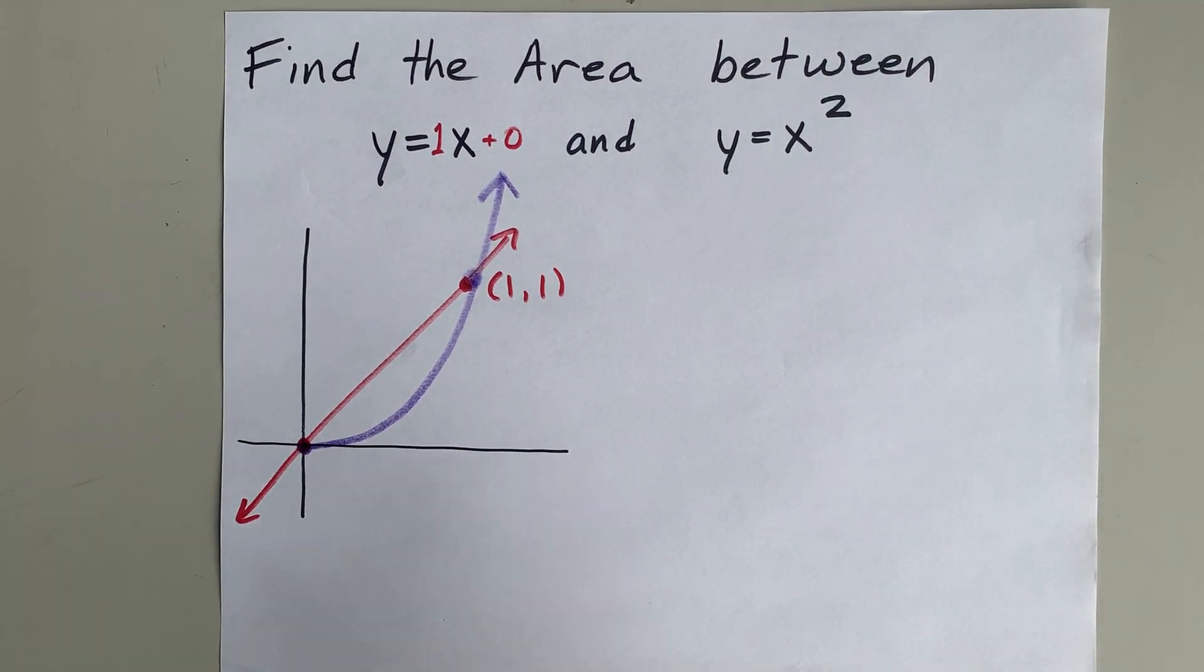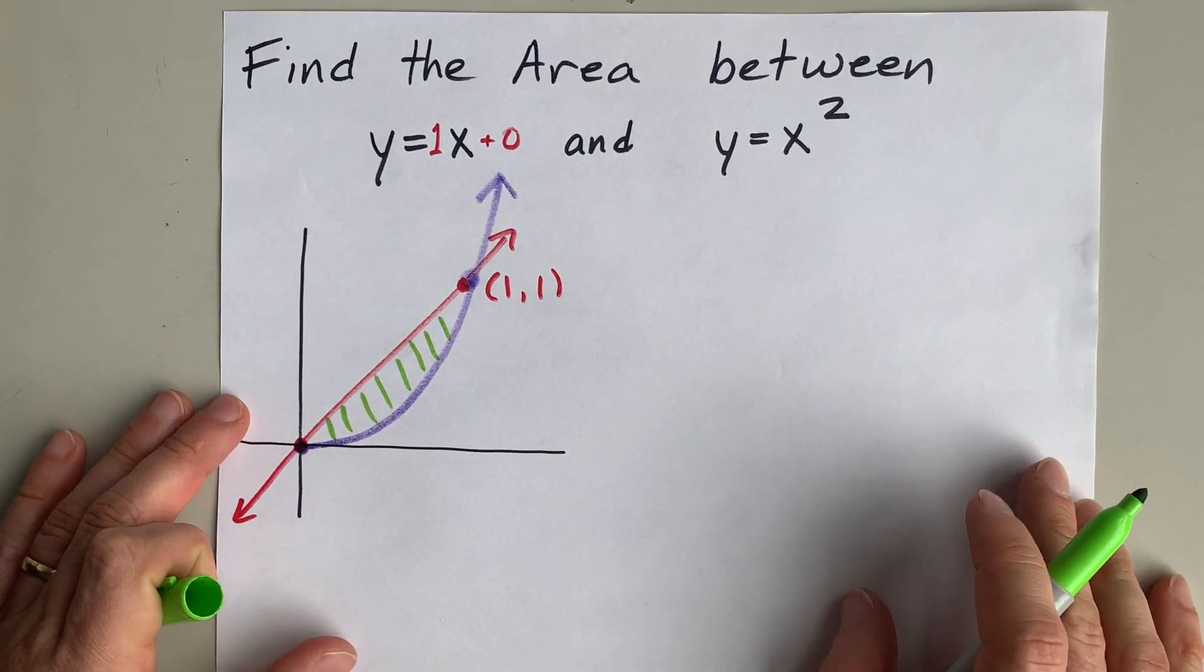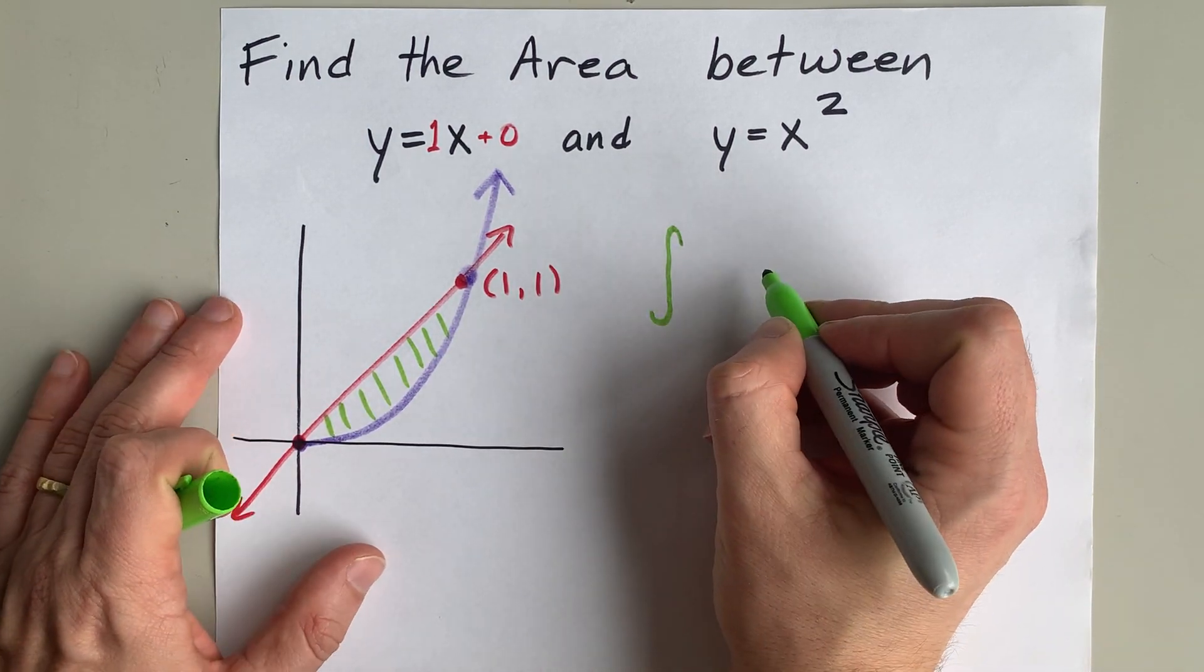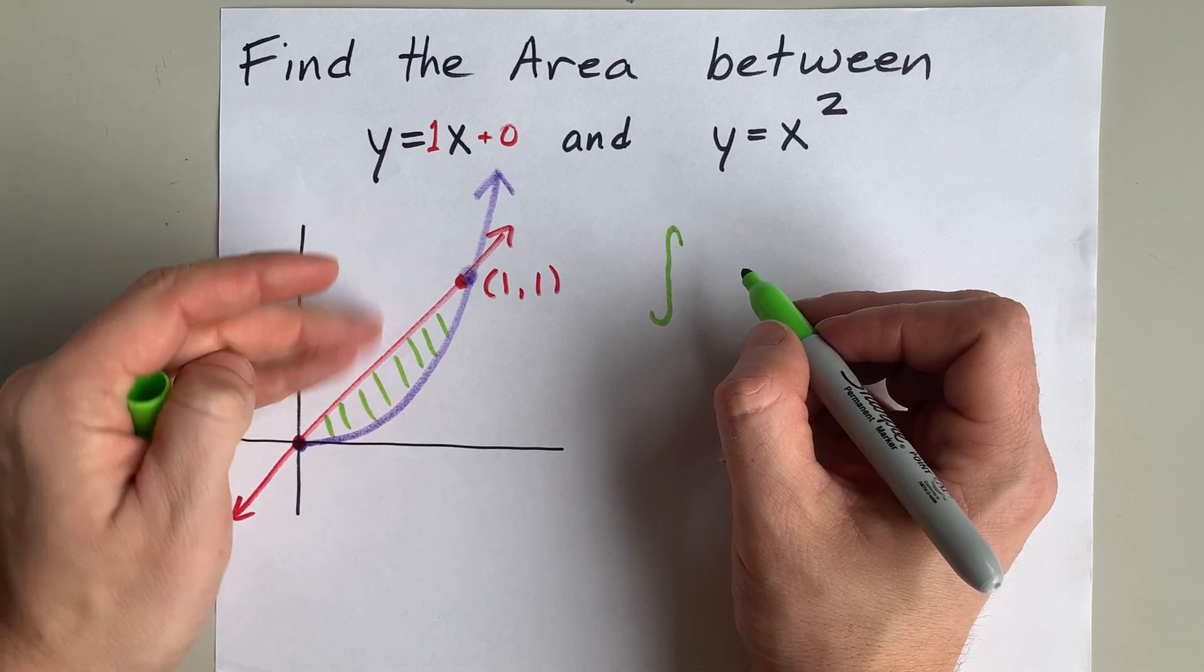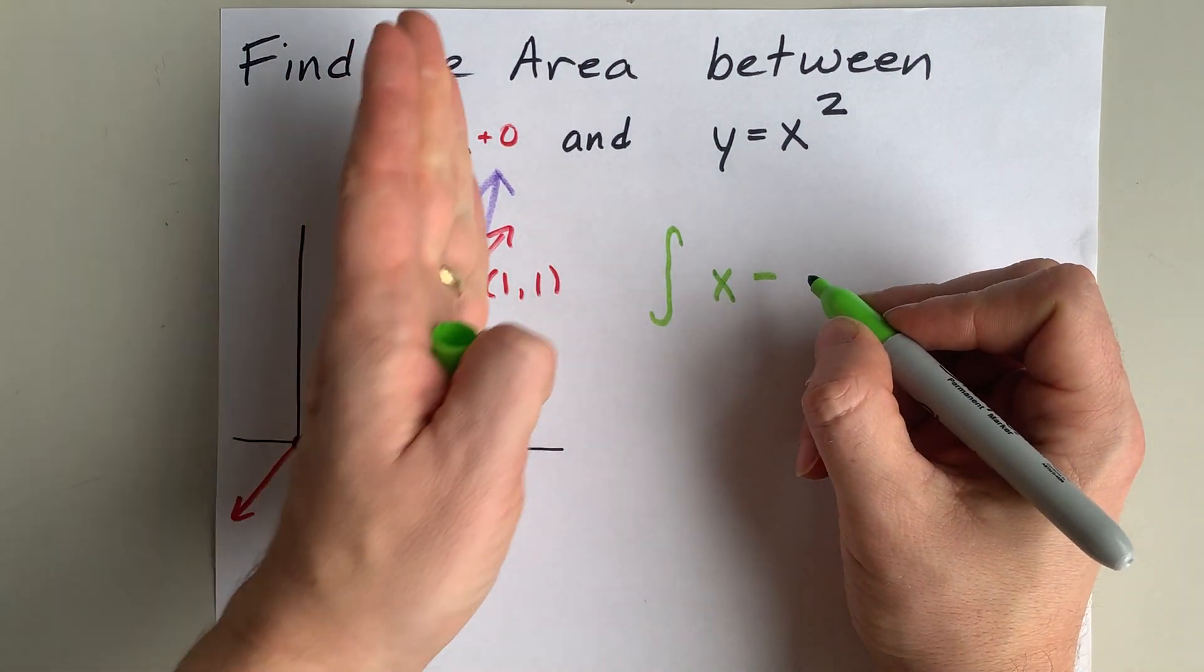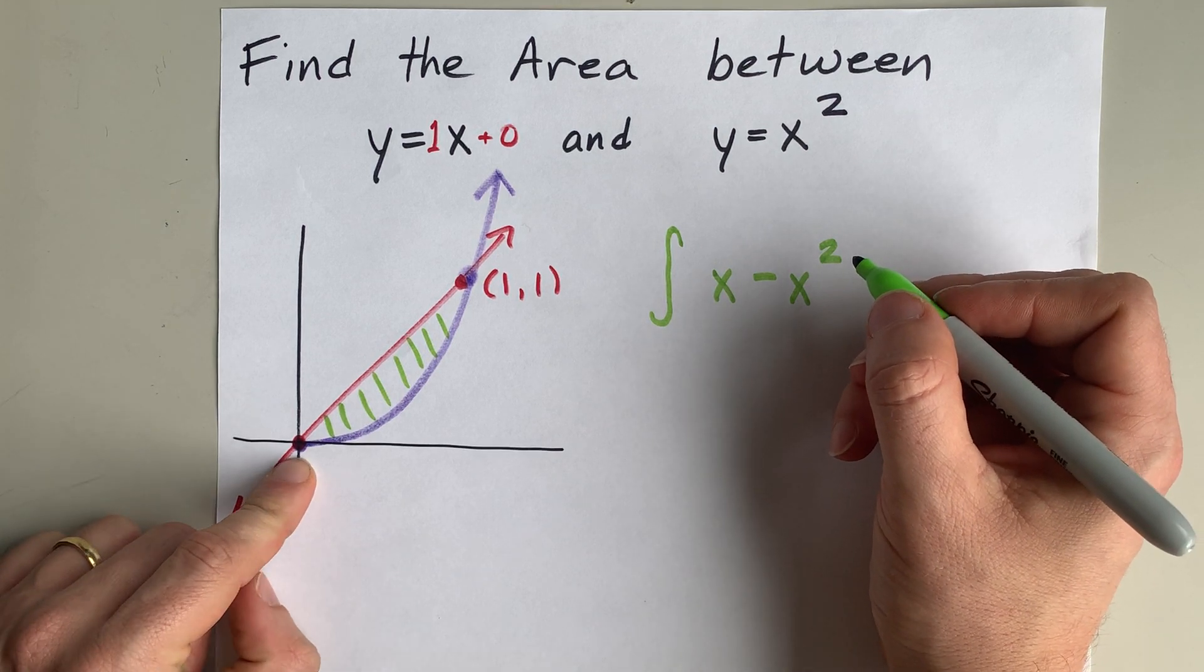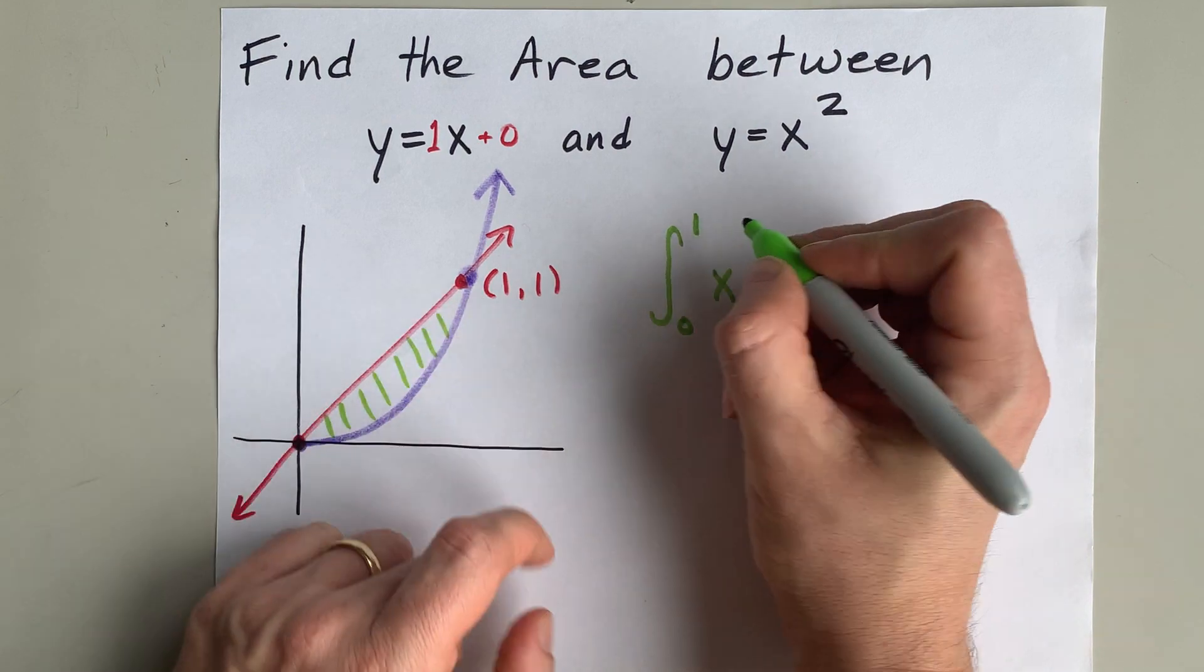So we are looking for the area in between these two curves. The secret to finding the area between two curves is to take the integral of the top function, or the function that is higher up, in my case x, minus the function on bottom, which in my case is x squared, from the starting point 0 to the ending point 1.